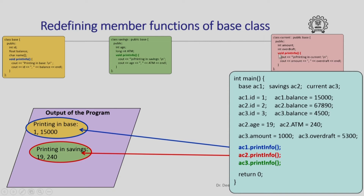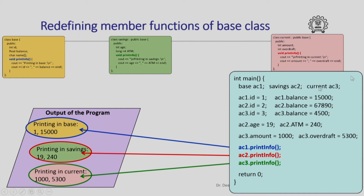Similarly, when I call AC3.print info, since print info has been redefined in the current class which is derived from the base class, it is not the definition of print info in the base class that takes effect, but the definition in the derived class. So here I will see 'printing in current' and then it will also print the values of amount and overdraft for AC3, which are respectively 1000 and 5300. Note that if the current class did not redefine print info, it would inherit the print info method of the base class and print 'printing in base' along with the values of ID and balance. But since it has been redefined, this redefined definition takes effect.